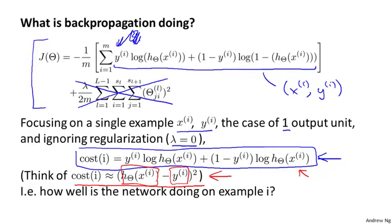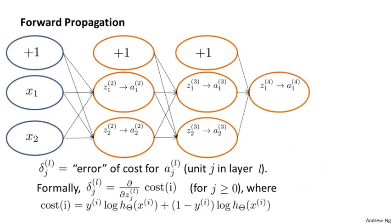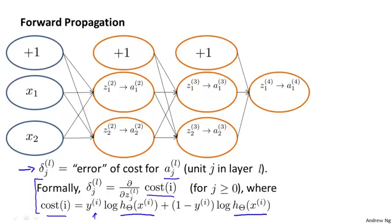Now let's look at what backpropagation is doing. One useful intuition is that backpropagation is computing these delta(l, j) terms. We can think of these as the 'error' of the activation value that we got for unit j in layer l. More formally — for those familiar with calculus — what the delta terms actually are is the partial derivative with respect to z(l, j) of the cost function. So they represent the partial derivative of the cost with respect to the weighted sum of inputs z(l, j).